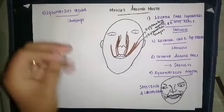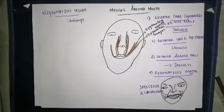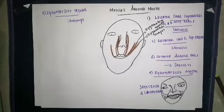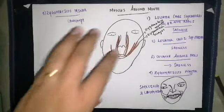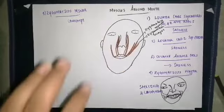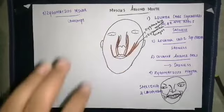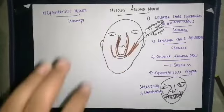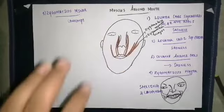Zygomaticus minor helps in making the expression of contempt. So zygomaticus major helps in smiling and laughing, while zygomaticus minor makes an expression of contempt. These are the muscles inserted into the upper aspect of the lip.